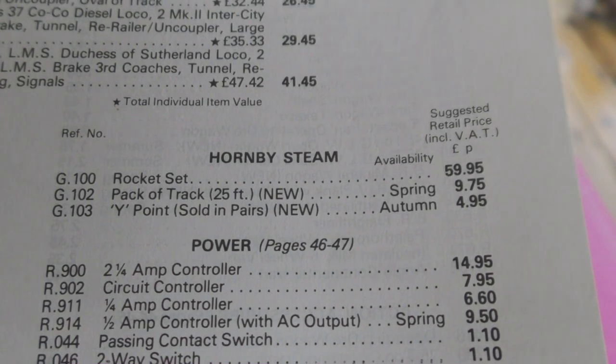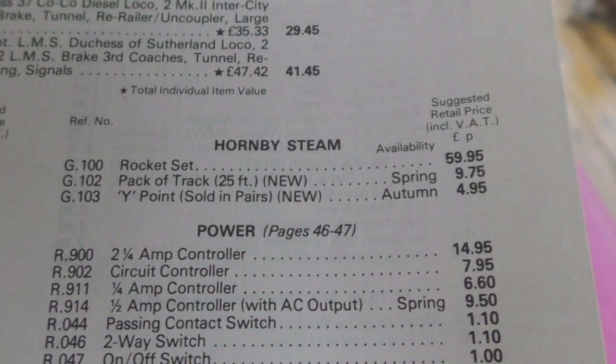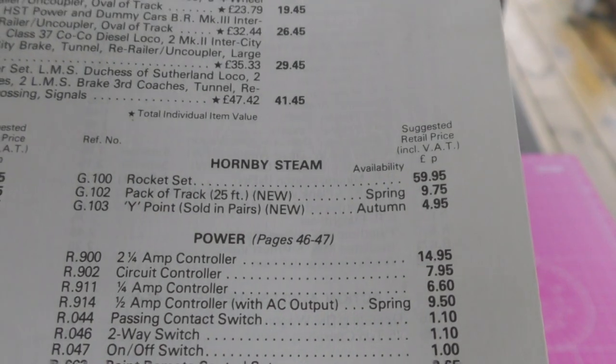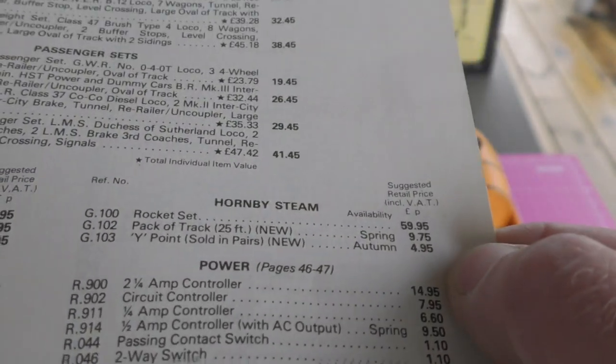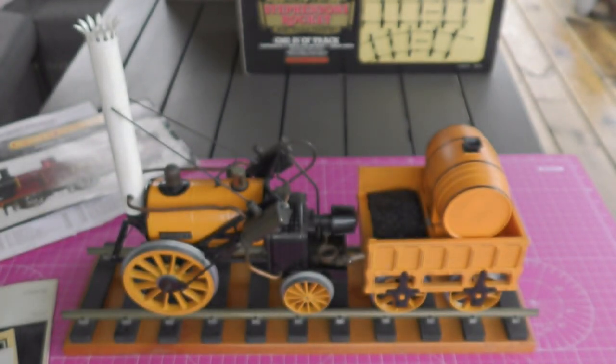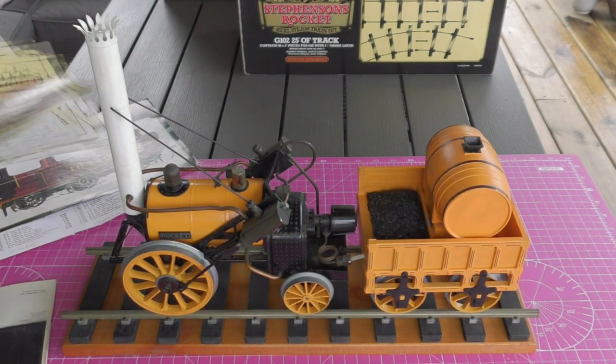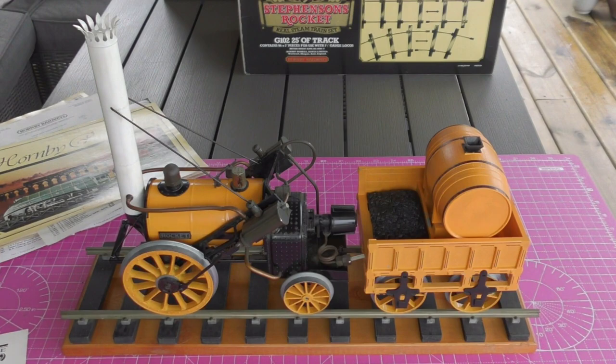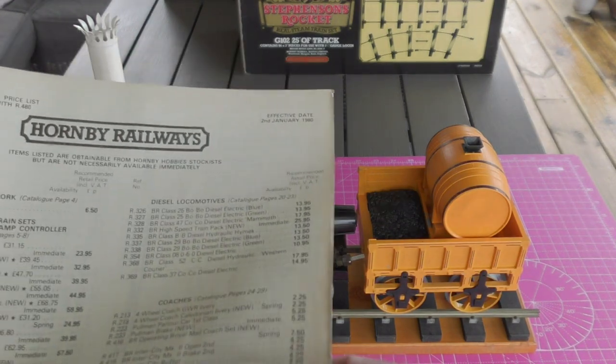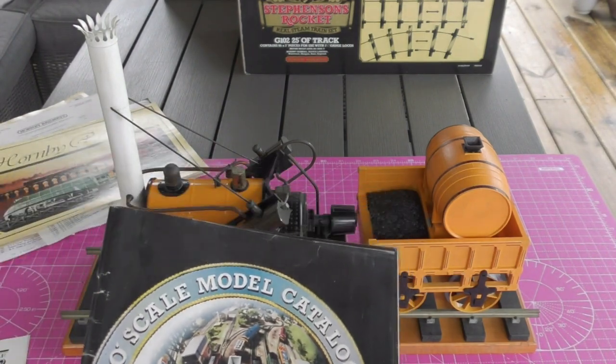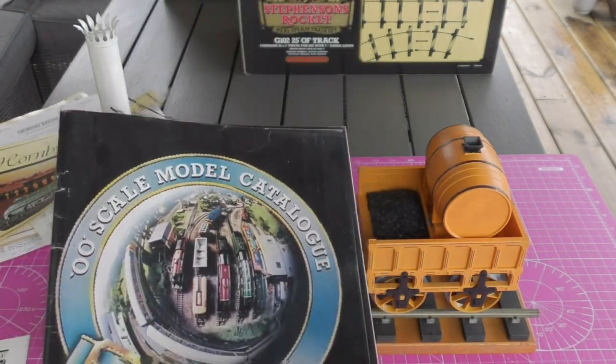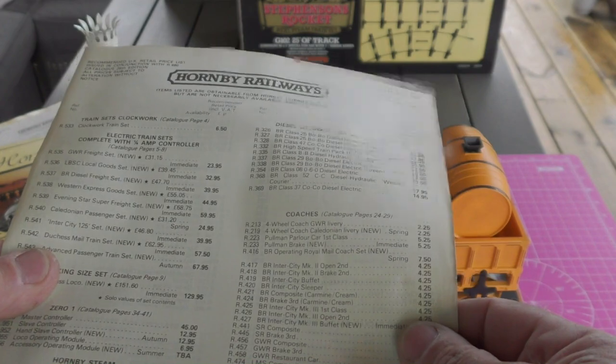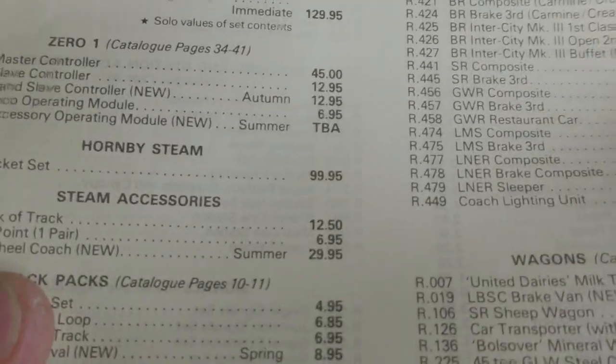I'm going to jump forward to 1980 now. I don't have a catalogue any later than 1980 because that tends to be my cut off point when it comes to collecting. Again the catalogue itself, now in portrait mode, no mention of the rocket inside the actual catalogue. But let's see, Hornby steam G100 rocket set, look at that, in the space of a year we've gone from £59 to £99.95, a heck of an increase.